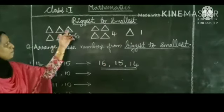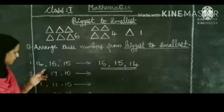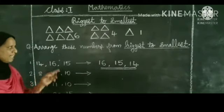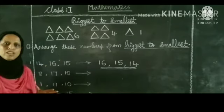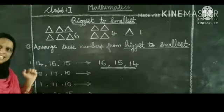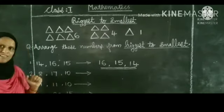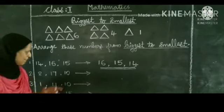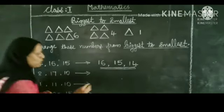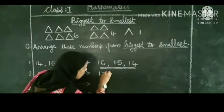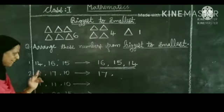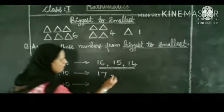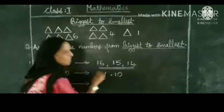The second question: arrange 8, 17, 10 from biggest to smallest. From these three numbers, which is the biggest? That is 17, so write 17 first. Then from 8 and 10, the bigger number is 10, so write 10 in second place. Then the only remaining number is 8.